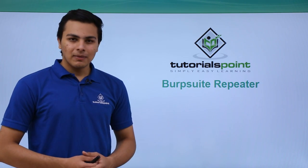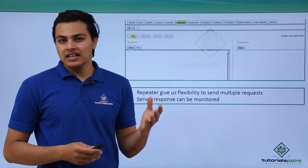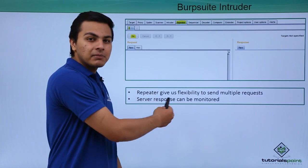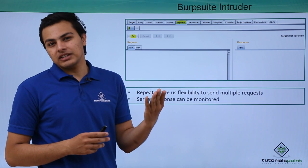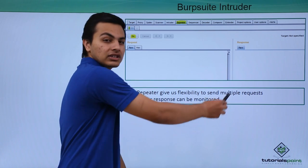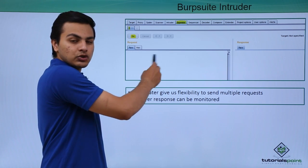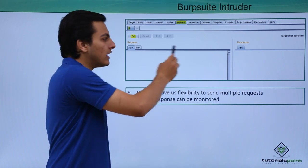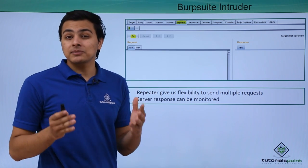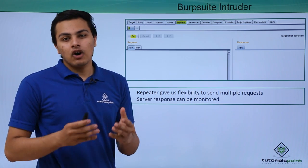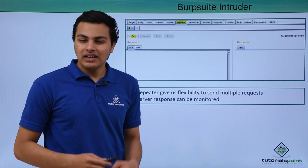In this video we'll talk about how we can use BurpSuite's Repeater tab in order to send multiple HTTP requests. The Repeater tab gives us flexibility to send multiple requests with different parameters and different methods, then check the server response. This becomes very handy when we are doing method tampering, parameter tampering, or API fuzzing.